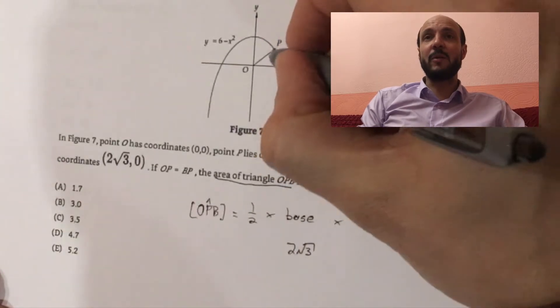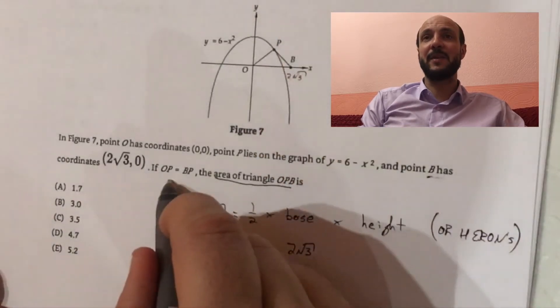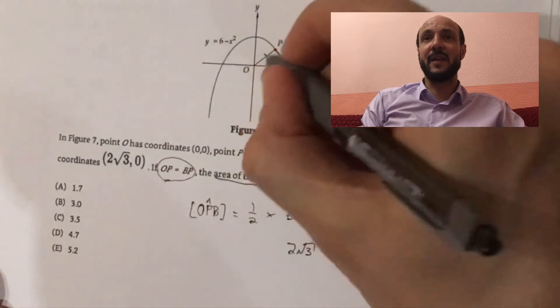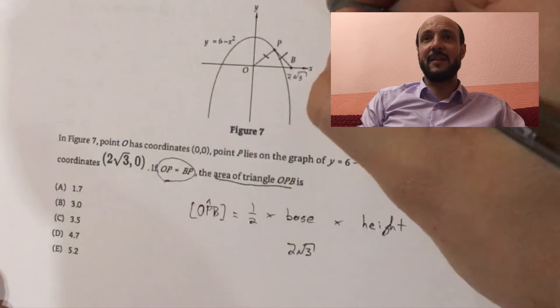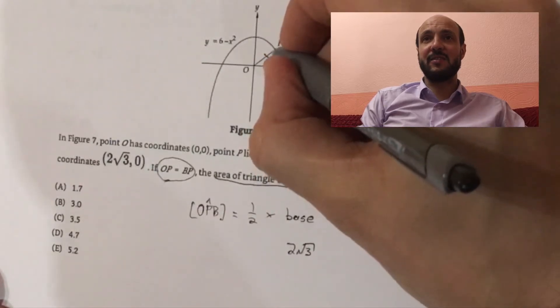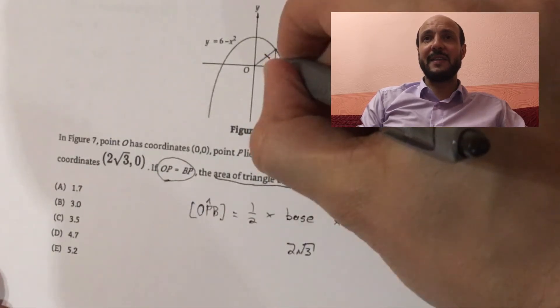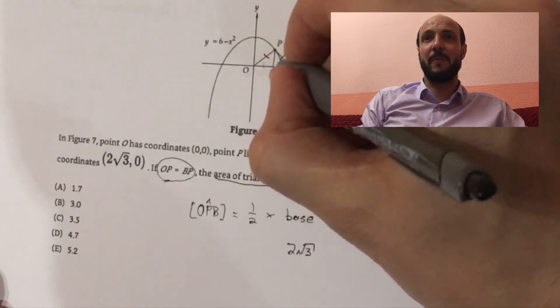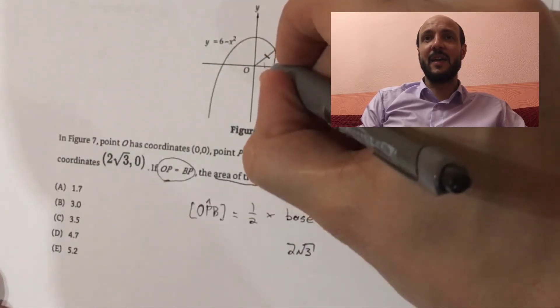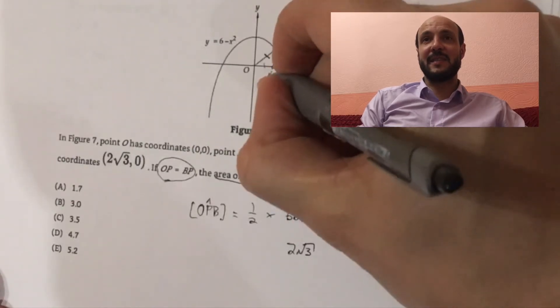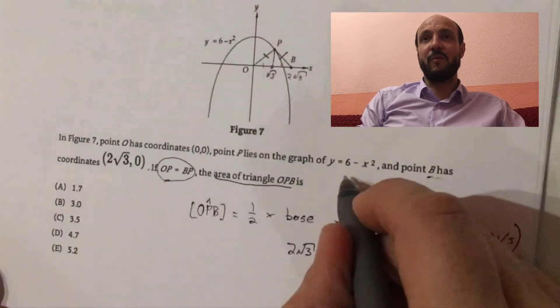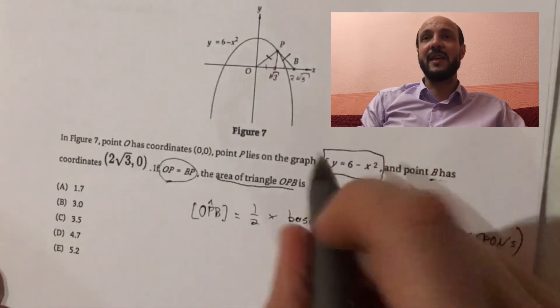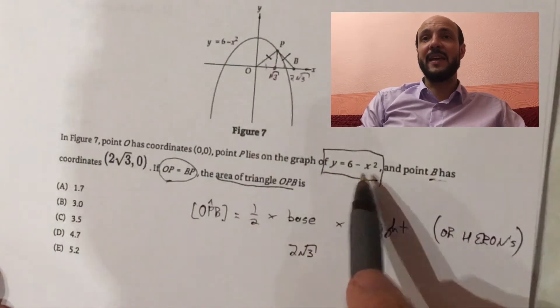What about the height? Well, we're told that OP is equal to BP, which means we're dealing with an isosceles triangle here. So if we drop a line down in the middle of the isosceles triangle, what we'll find is these two lines will be equal. This will bisect our line OB. So if the line is 2 root 3, if we bisect it, then it's going to be root 3. It's going to be half of 2 root 3. So the x-value of P is root 3.